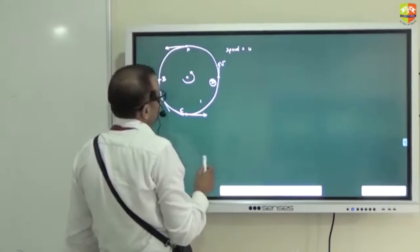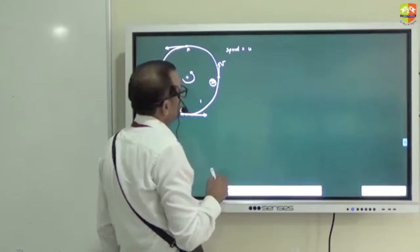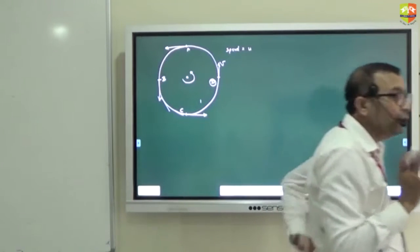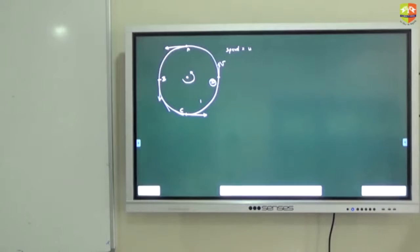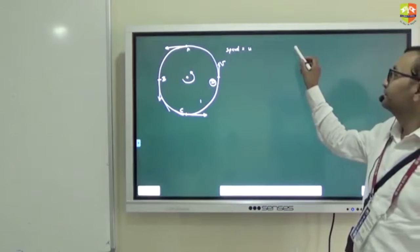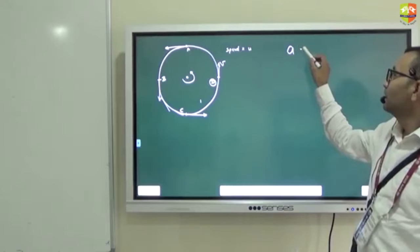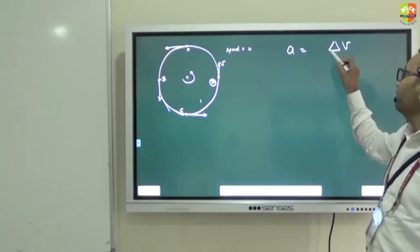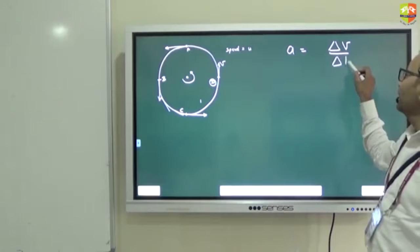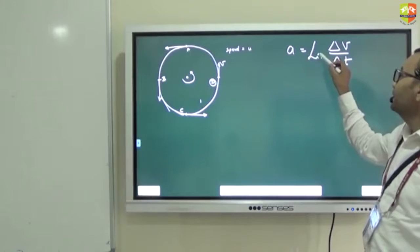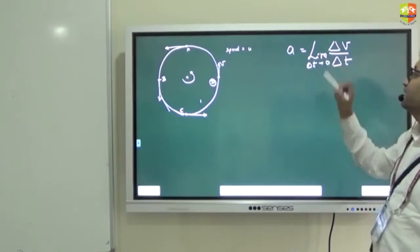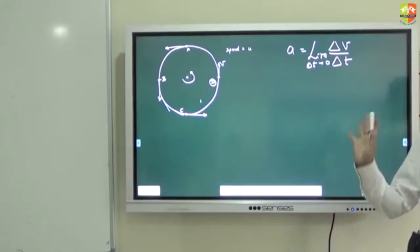Draw a circle. Do you remember what is the formula for acceleration? The average acceleration is delta v by delta t. The limit is delta t tends to 0. We are going to use this.